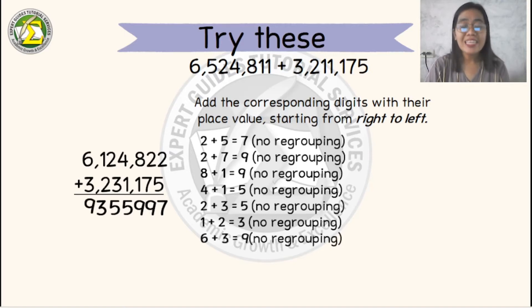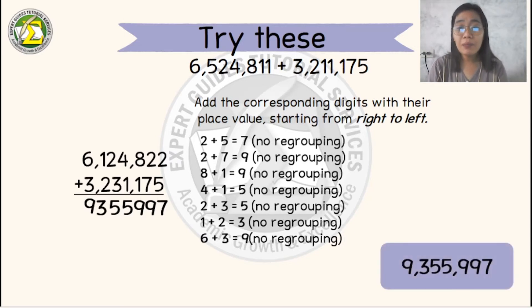So therefore, the sum or the total of 6,524,811 and 3,211,175 will be 9,355,997.